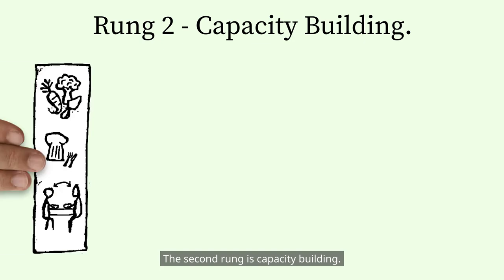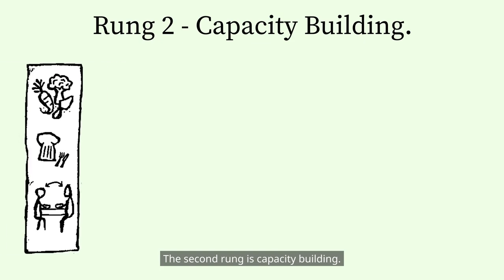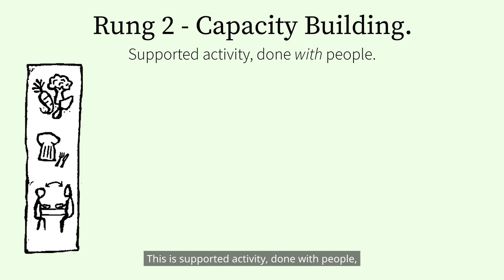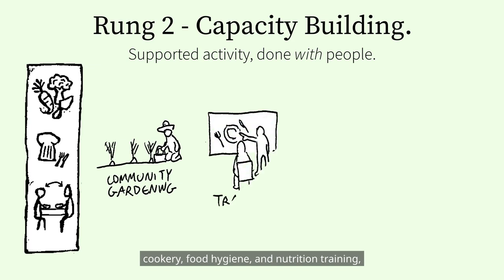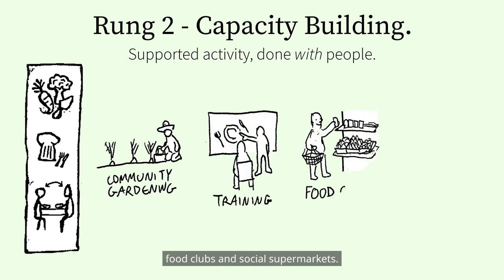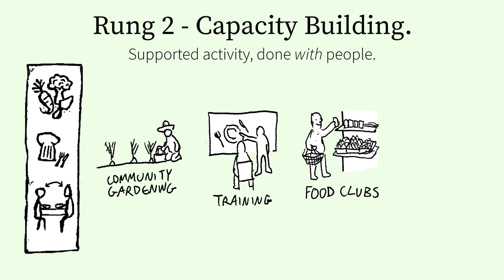The second rung is Capacity Building. This is supported activity done with people to help build skills, stability and resilience. Examples might include community gardening, cookery, food hygiene and nutrition training, food clubs and social supermarkets, and social eating.